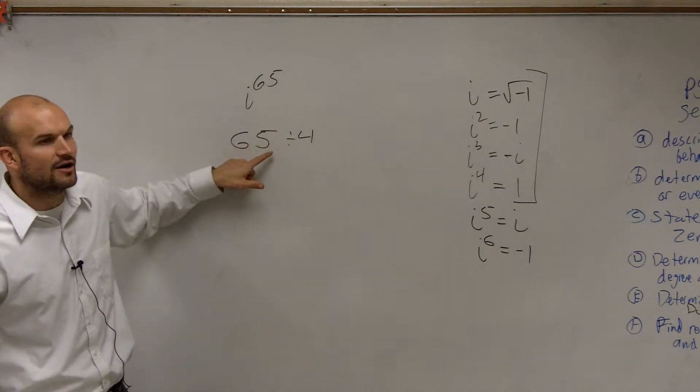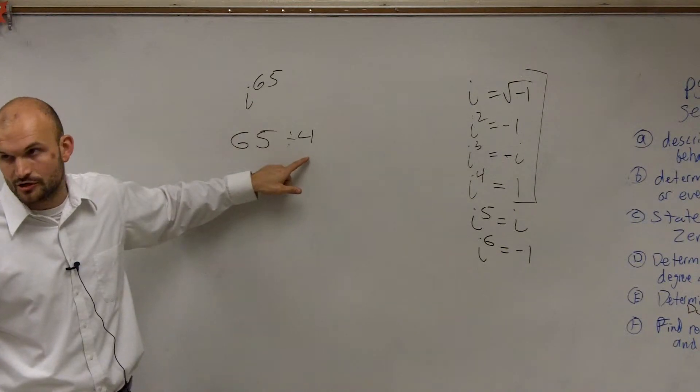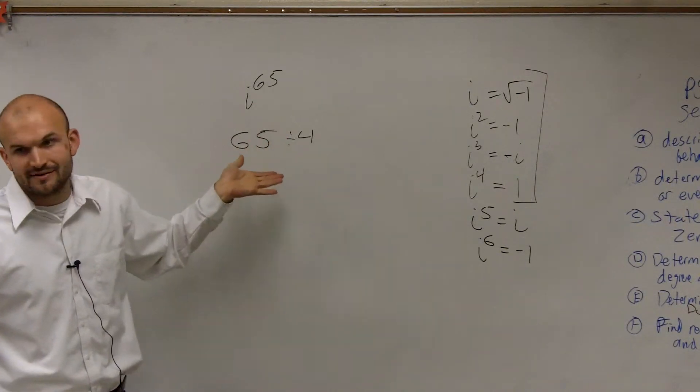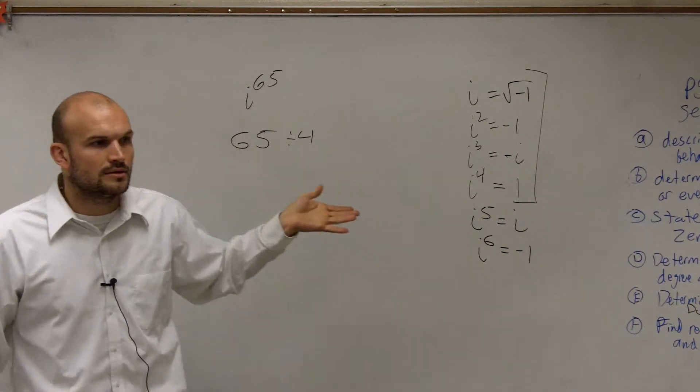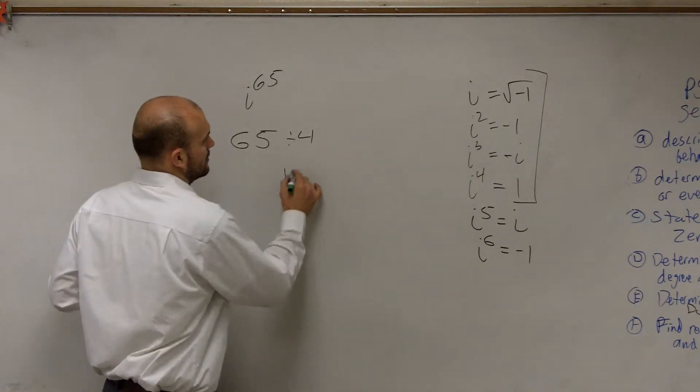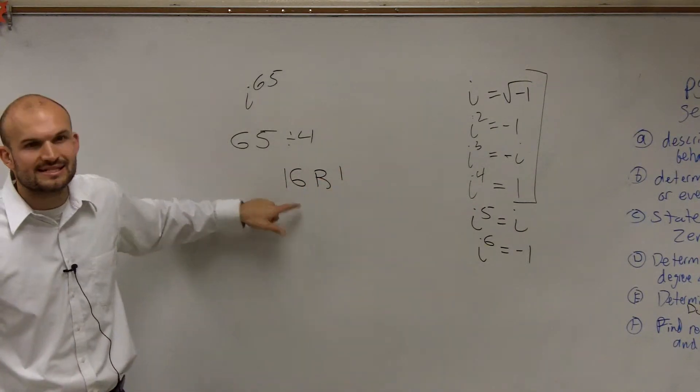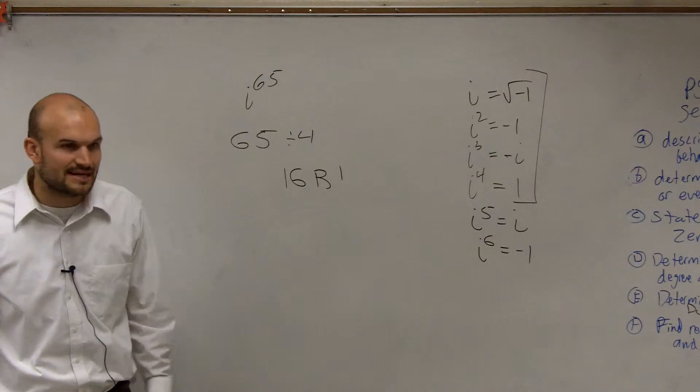So what we're going to do is we're going to divide our exponent by how many times it takes for it to repeat. So 65 divided by 4 ended up being 16 with a remainder of 1. So what it means is it repeated 16 times. Do we care how many times it repeats?